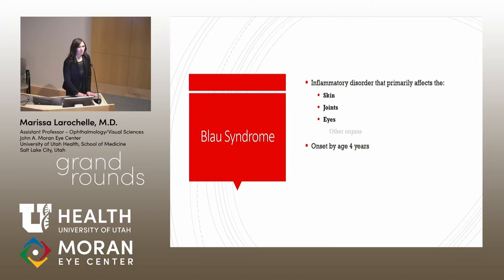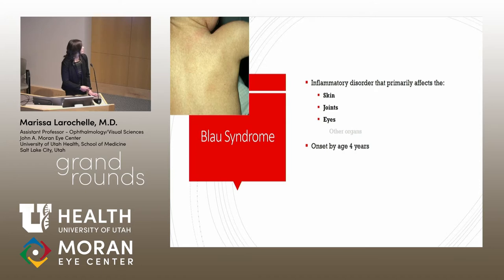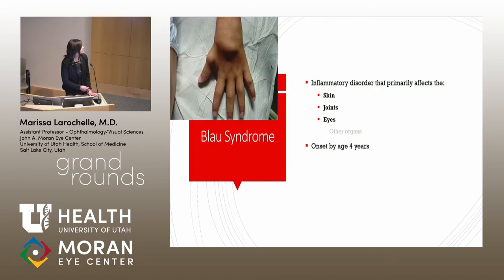This is called Blau syndrome, also known as juvenile systemic granulomatosis. It's an inflammatory disorder comprised of a triad: dermatitis, which is typically the first sign — a scaly rash over the torso and extremities in very young children; arthritis, typically a boggy synovitis affecting the wrists, hands, and feet; and uveitis, which is normally a granulomatous pan-uveitis, as our patient had. Other organs can be affected — liver, heart, spleen, kidneys — but typically not the lungs, as we see in sarcoid. Age of onset is under four years old.